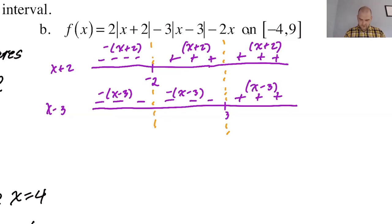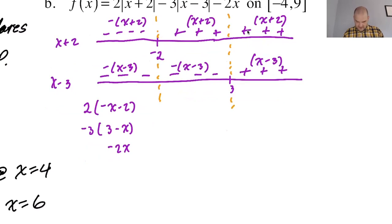We have 2 times negative x minus 2. And then minus 3 times 3 minus x. And then there's just a minus 2x. So negative 2x plus 3x is x minus 2x gives me negative x. And then negative 4 minus 9, negative 13. Negative x minus 13 on that interval.